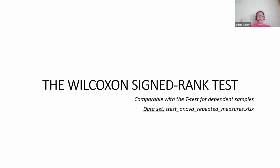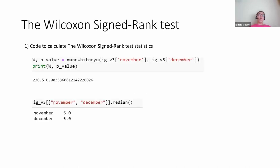You can also use the Wilcoxon Signed-Rank test, which is comparable to the T-test for dependent samples. If you have two time points — for example November and December — and your distribution is not normal, you use this test instead. For example, you can see if people spend more money in November or December. The result shows it is statistically significant: they spend more money in November — we don't know why, perhaps more holidays or birthdays — and this difference is statistically significant, so we can conclude there is a difference between those two groups.